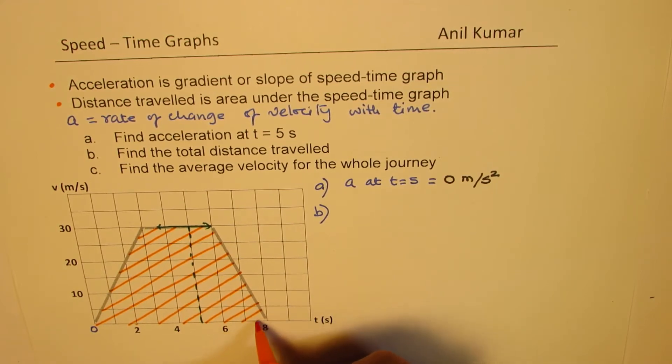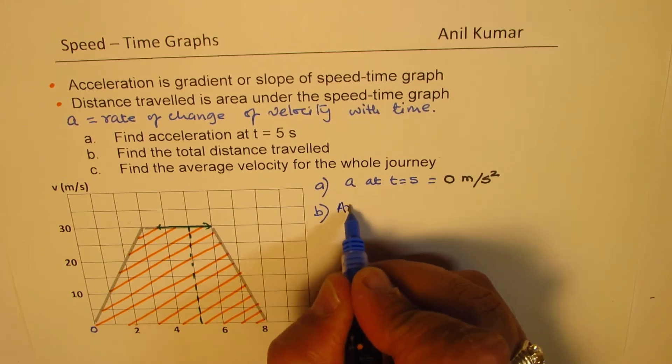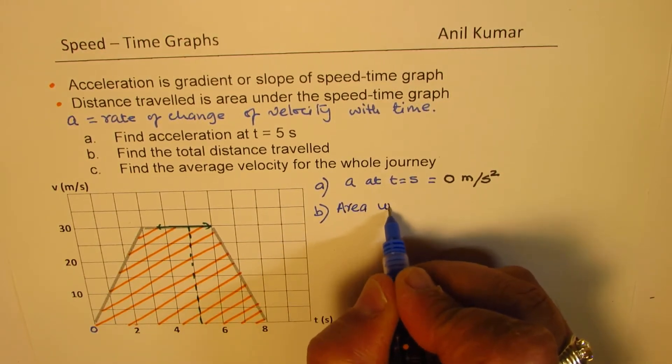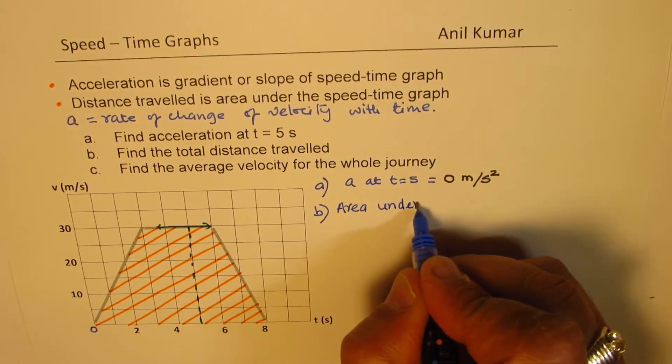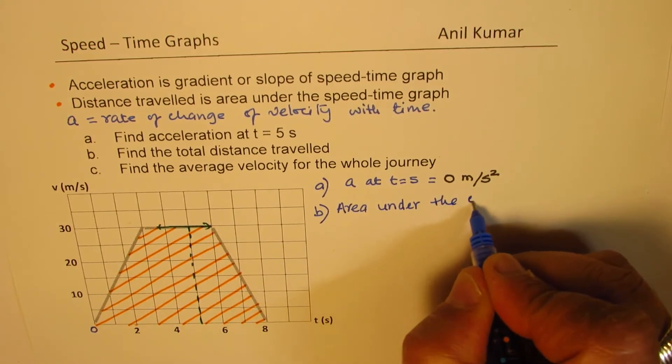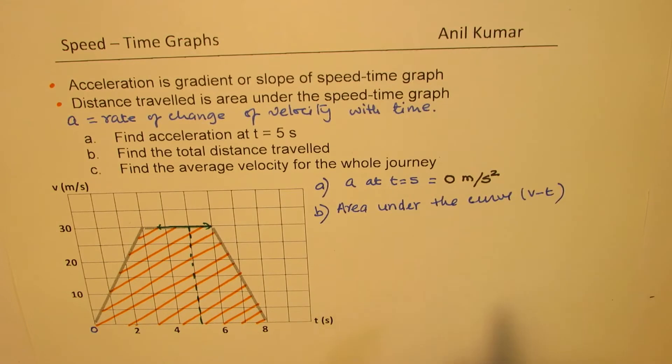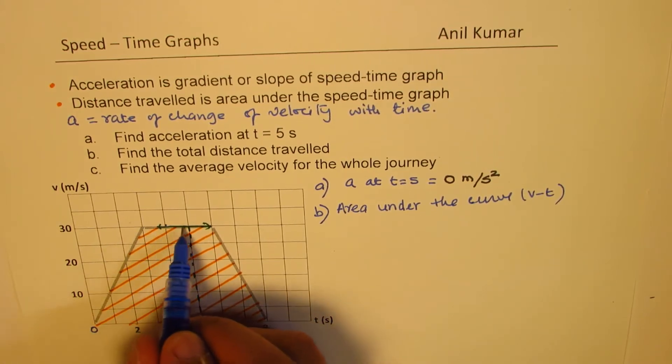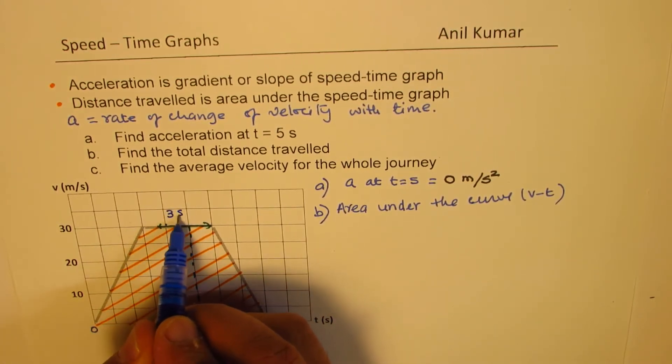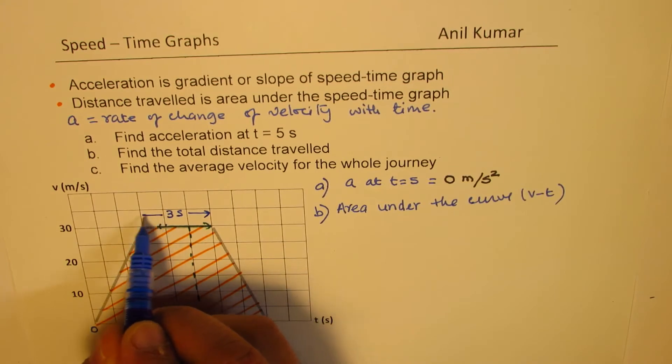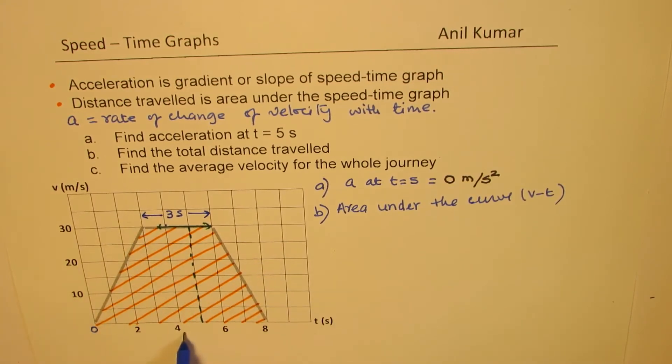So it is area under the curve, which is vt graph. So this is the trapezoid where the one side is 3 seconds. 1, 2, 3. So this is 3 seconds. The other side here is 8 seconds.